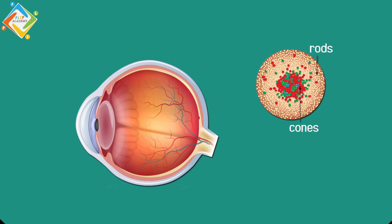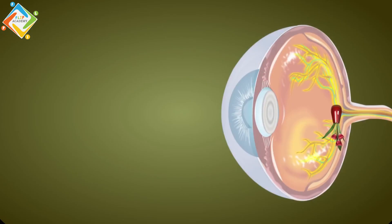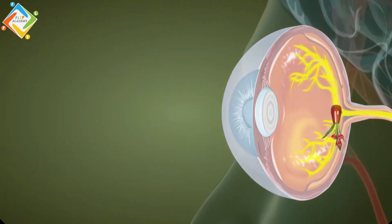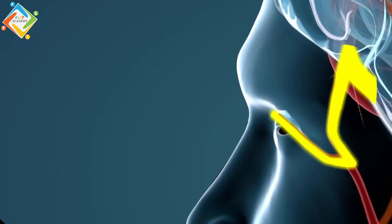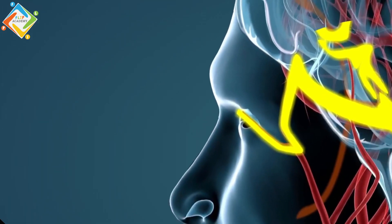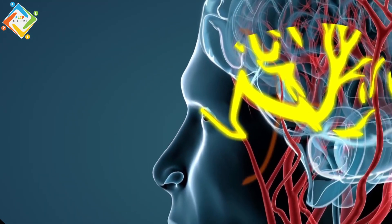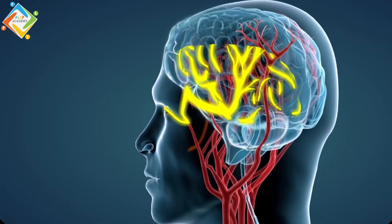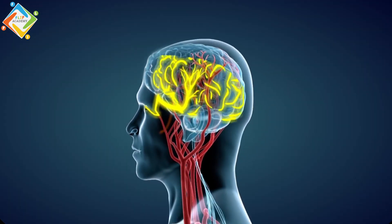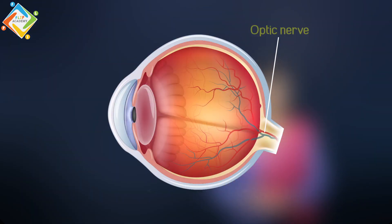In the rods and cones, electrical signals are generated. These electrical signals get transmitted to the brain by means of a nerve called the optic nerve. The point where the optic nerve and the retina intersect is called the blind spot.